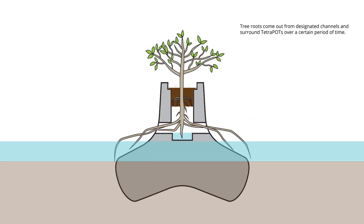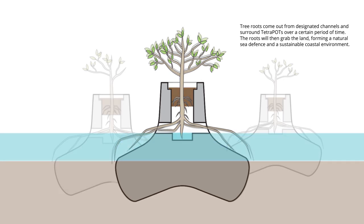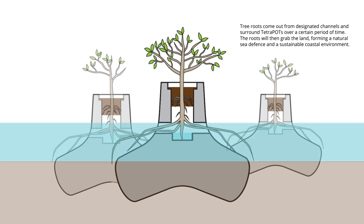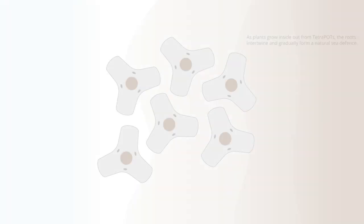Tree roots start to come out from designated channels and surround tetrapods over a certain period of time. The roots will then grab the land, forming a natural sea defense and a sustainable coastal environment.